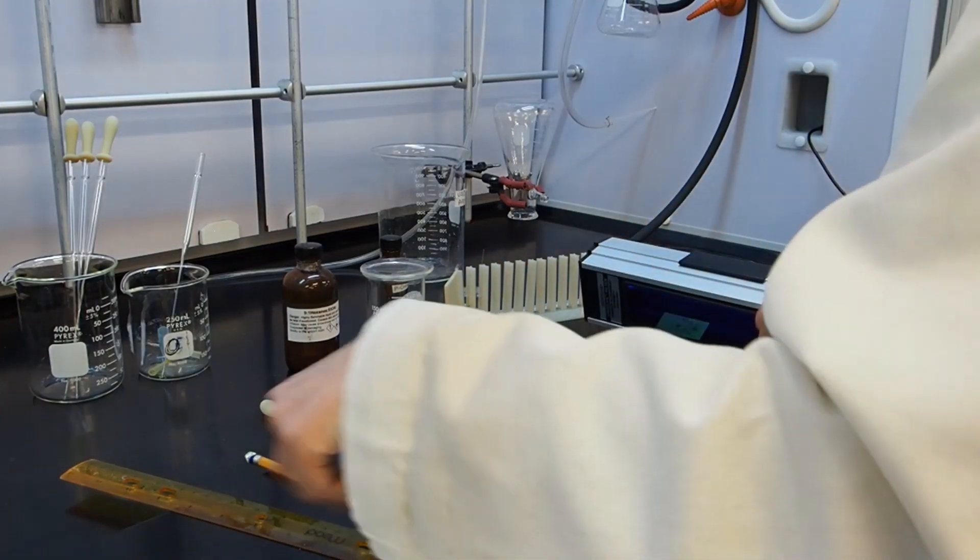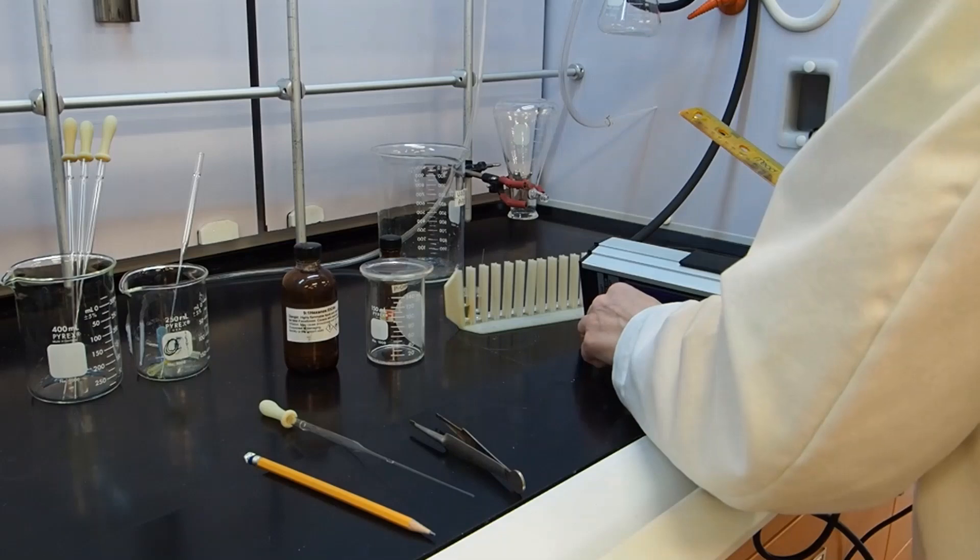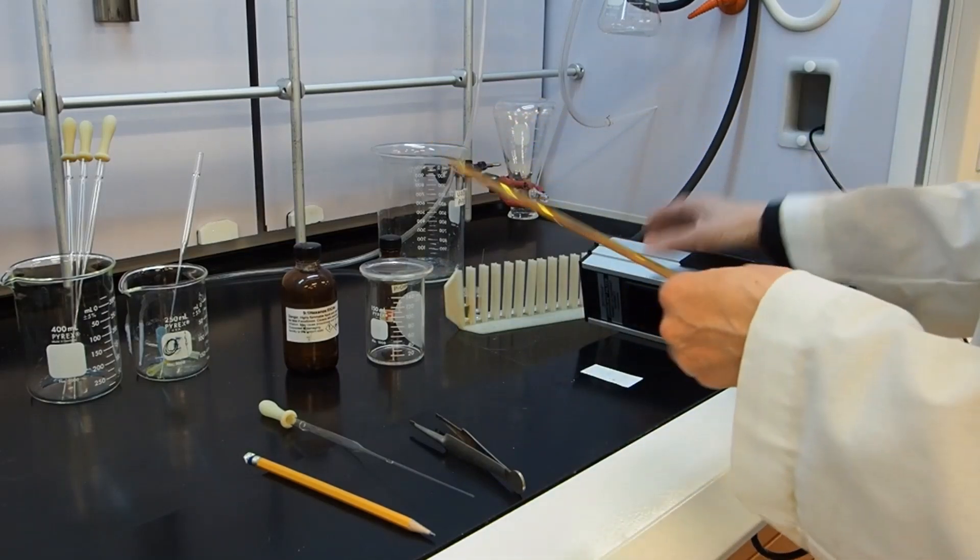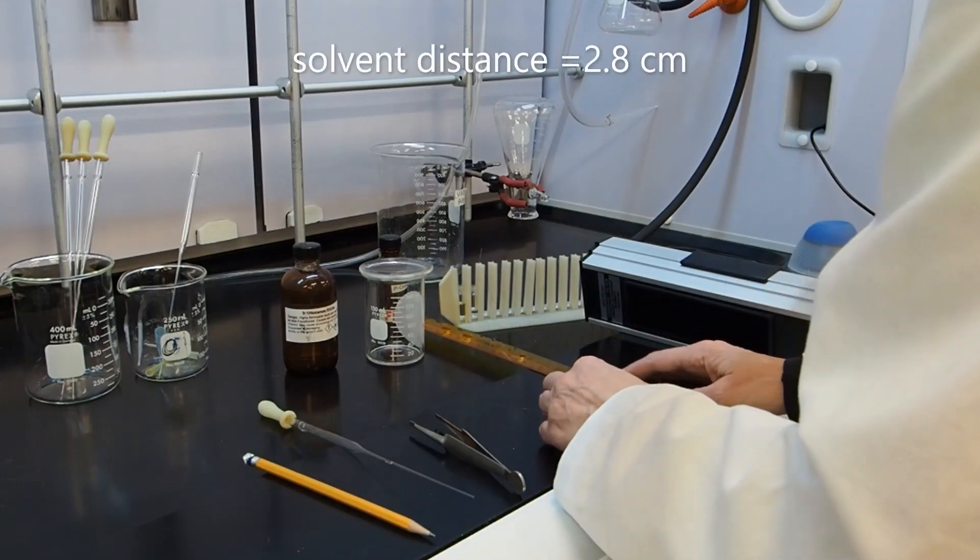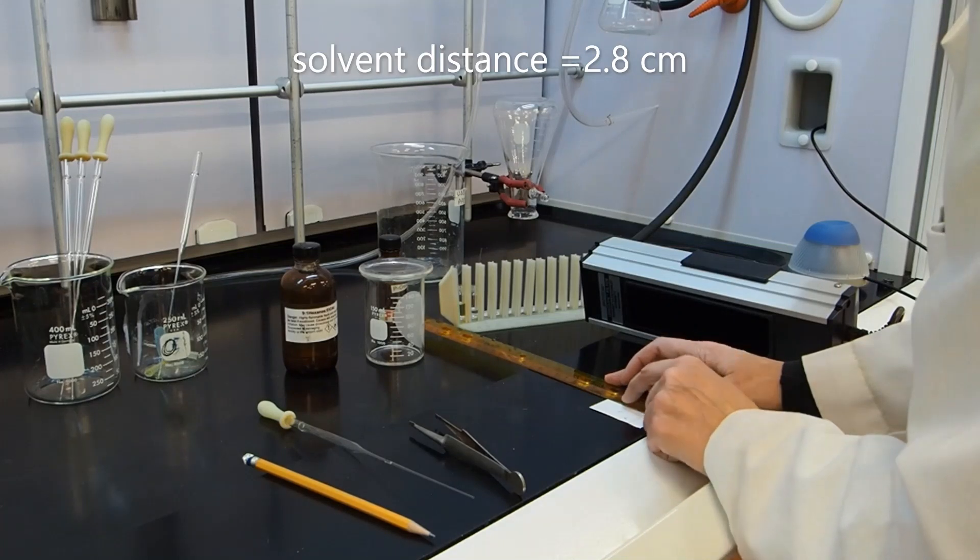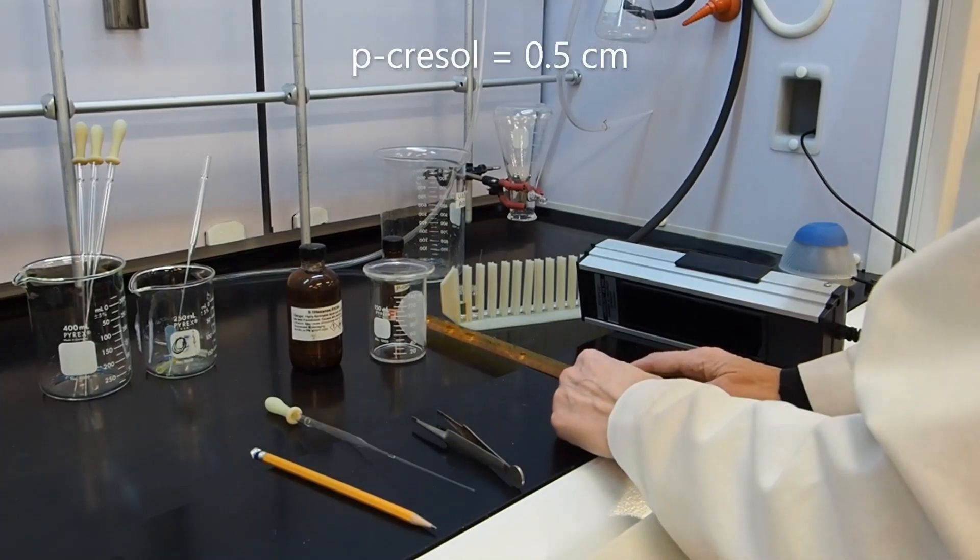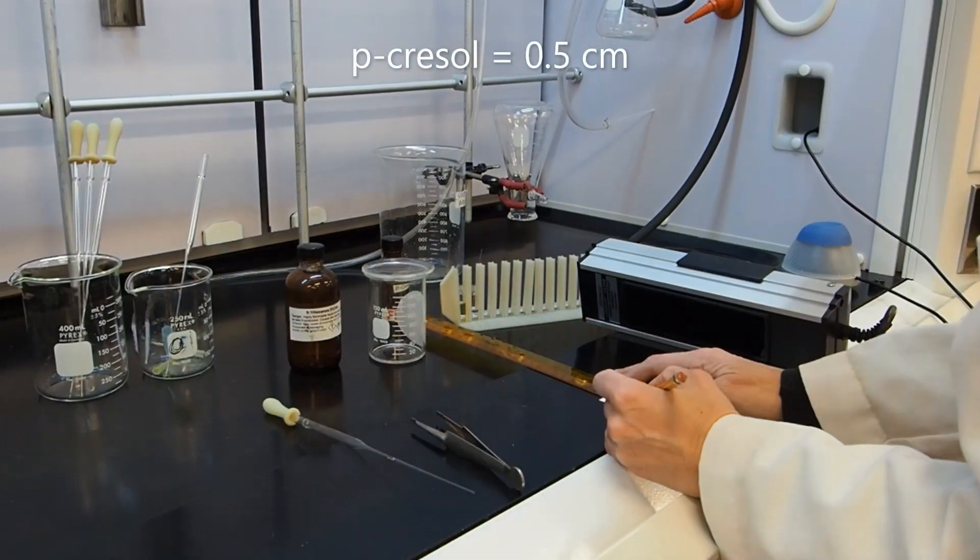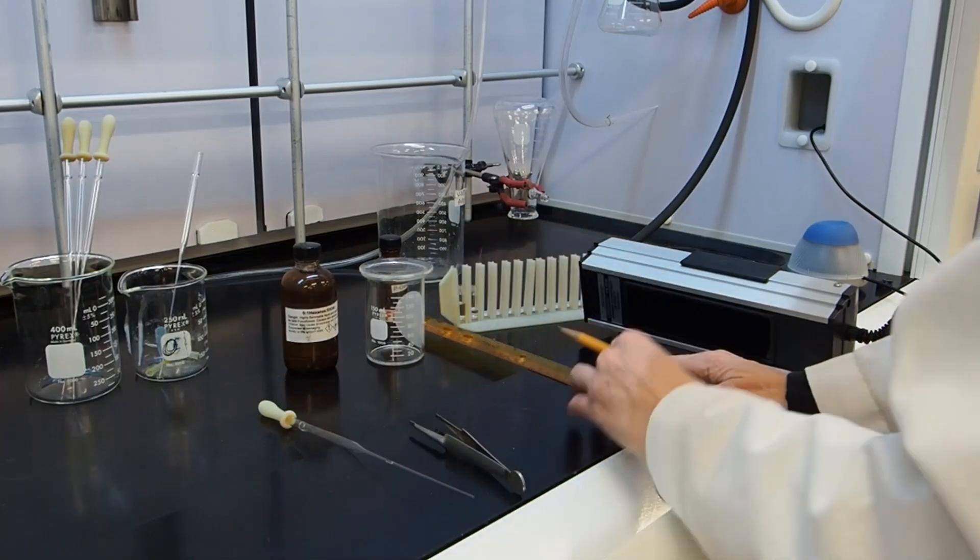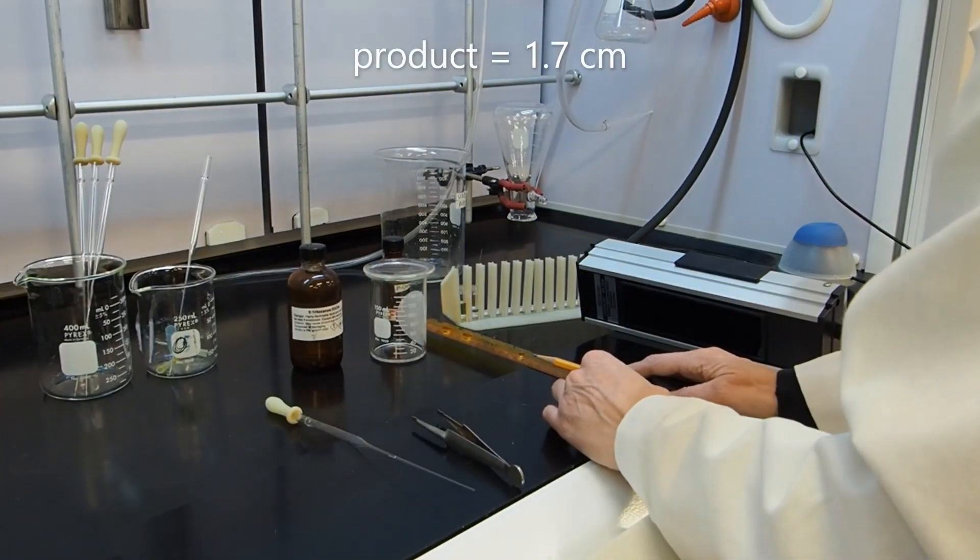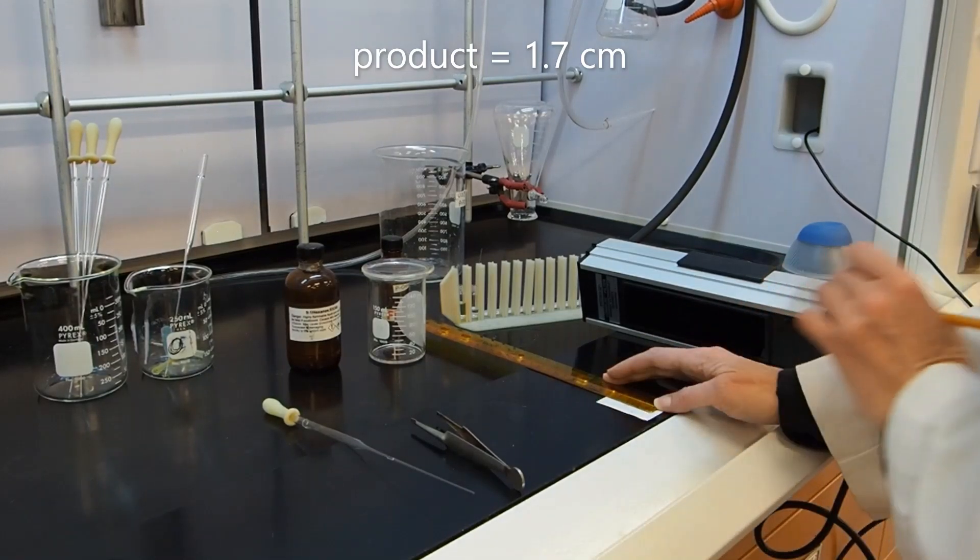I'm going to go ahead and measure the RFs. I'm going to measure them in centimeters, and I no longer need my light, so I'm going to turn it off. Measuring from the starting line to the solvent finish line, that looks like about 2.8 centimeters. Measuring from the starting line to the middle of the cresol spot, that's about 0.5 centimeters. And from the starting line to the middle of what I hope is my product spot, it's about 1.7 centimeters.